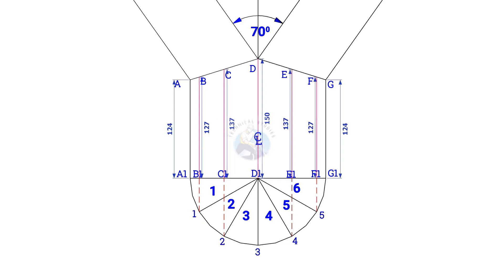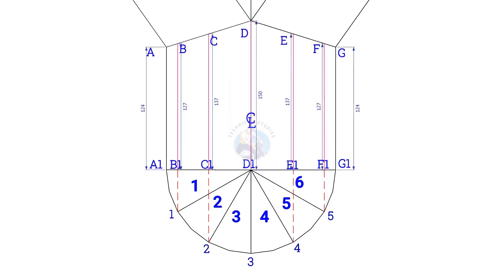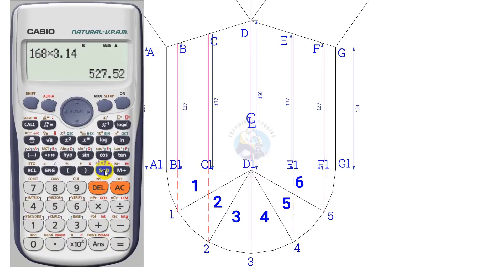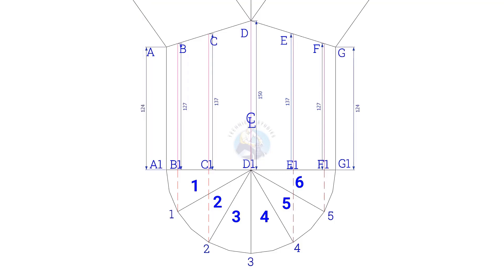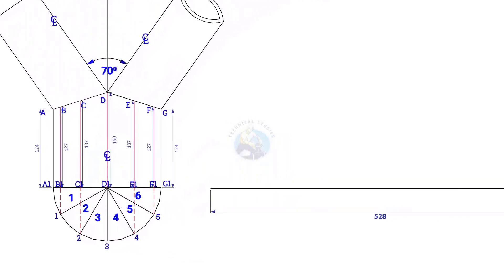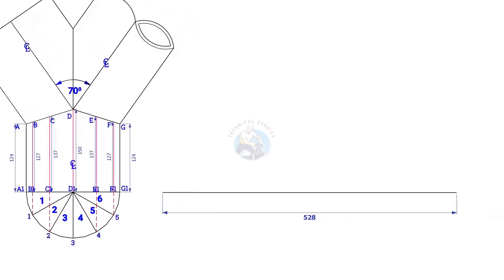Now calculate the circumference of the pipe. Multiply the pipe diameter by 3.14 or pi. Since the diameter of the pipe is 168mm, multiply it with 3.14. The circumference is nearly 528mm. Draw a 528mm long line. Since we divided the half circle into 6 parts, divide the line into 12 equal parts. 528 divided by 12 is 44, so the length of each segment is 44mm.